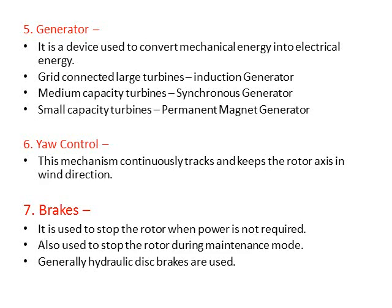Next is yaw control. Yaw control is a mechanism which makes the turbine perpendicular to wind speed. This mechanism continuously tracks and keeps the rotor axis in the wind direction. Next are brakes, which are used to stop the rotor when power is not required or during maintenance mode. Generally hydraulic disc brakes are used.